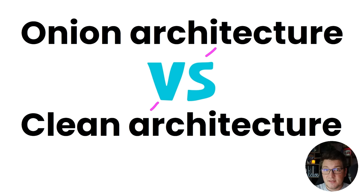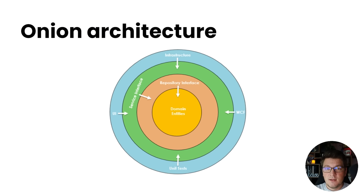We're going to look at some diagrams and see how they are actually very similar, and then I'm going to show you a practical implementation using both of these architectures. Let's start with the onion architecture — I'm starting with it on purpose because it was created before the clean architecture. The onion architecture first appeared in 2008 and was coined by Jeffrey Palermo.